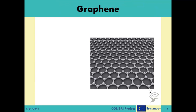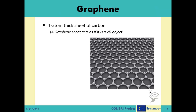Regarding the terahertz waves, the major problem becomes: how are we going to generate signals in this frequency range efficiently? Enter graphene, a one-atom-thick sheet of carbon. It is a very new material, first produced in lab environments in 2003, which has unique properties.